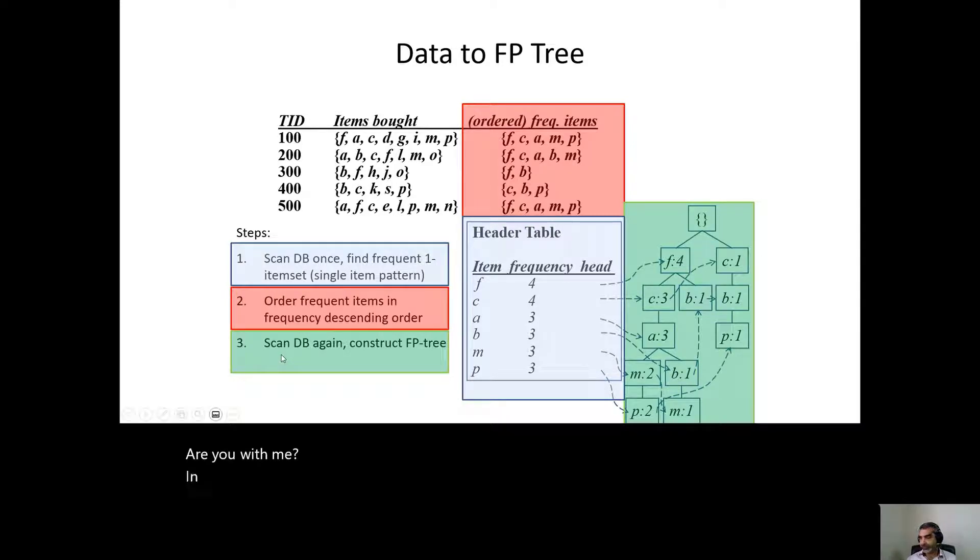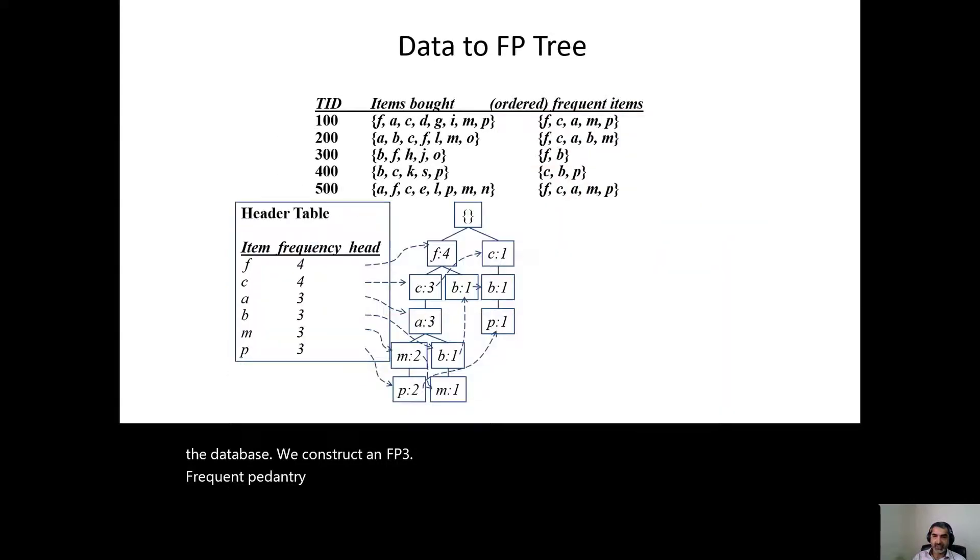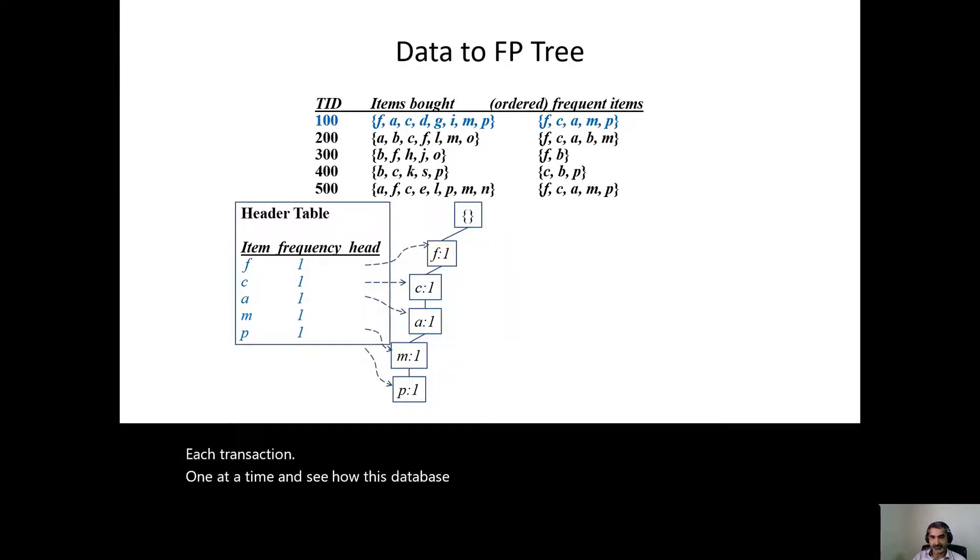In step number three, we scan the database a second time. And this is the last time we scan the database. We construct an FP-tree, a frequent pattern tree. This construction is interesting. How do we do that? Let's look at each transaction one at a time and see how this tree is constructed. First transaction, we take F, C, A, M, P and we create a branch in the tree. So to the root of the node, we put the first item and the frequency of that item: C, A, M, P.